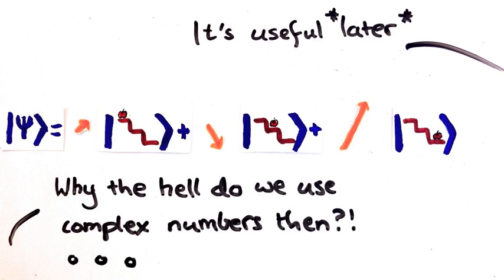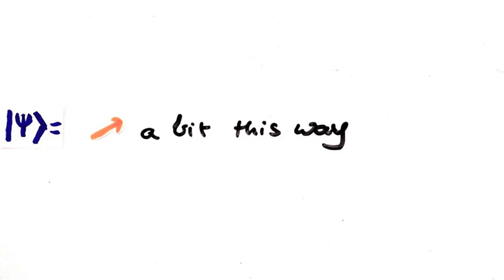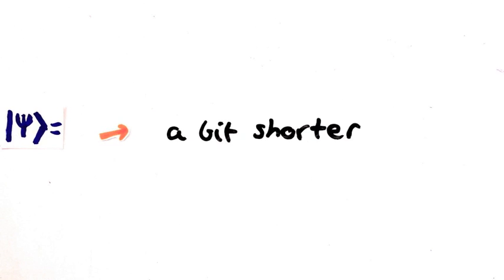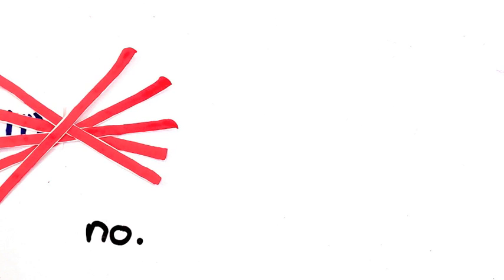So that's the Born rule. But drawing little arrows with exactly the right length and angle is really tedious, so in case you haven't seen it before, I'll introduce you to the more standard notation for complex numbers.